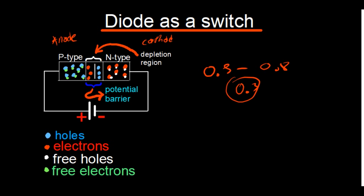A diode essentially has a voltage drop, and it also makes sense to understand that there is high resistance on one end of the diode compared to the other — which is why there is a voltage drop. That's basically the idea of forward bias and reverse bias.